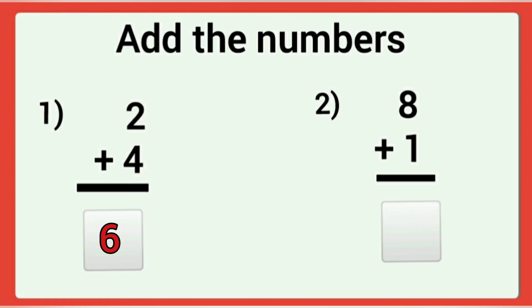Next question: eight plus one. Here, just keep eight. Always keep the bigger number in your mind. Eight, then add one more — or take one finger — then count from eight. Eight, nine. The answer is nine. Eight plus one is equal to nine.